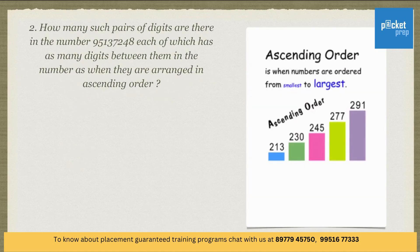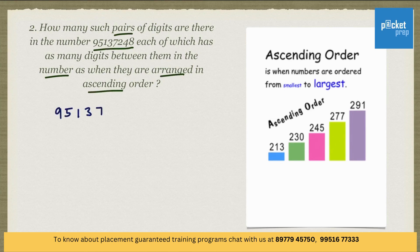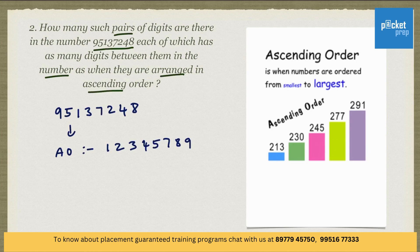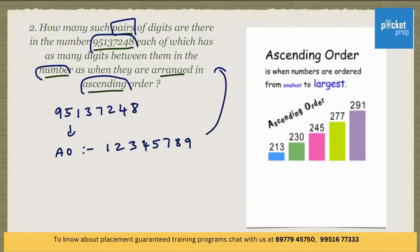Another question. How many such pairs of digits are there in the number 9, 5, 1, 3, 7, 2, 4, 8 — each of which has as many digits between them in the number as when they are arranged in ascending order? Let's arrange this in ascending order: 1, 2, 3, 4, 5, 7, 8, 9. The number of digits between 5 and 3 in the original sequence is 1, and between 3 and 5 in the ascending order is also 1. So, we have one pair satisfying the given condition.